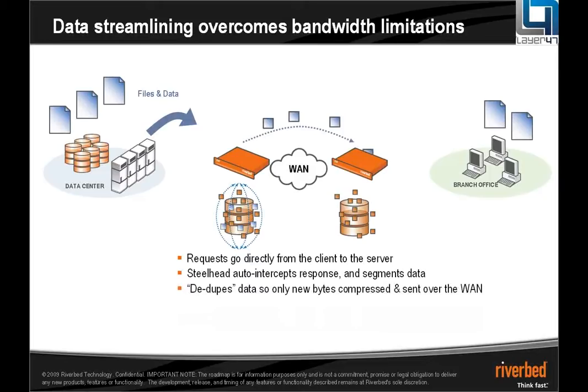The Steelhead at the other end will receive that information and store the same data — the references and the raw data — on its own internal hard drive. It will then send it on to the client, who will notice some speed improvement. And there will have been less traffic sent across the network.